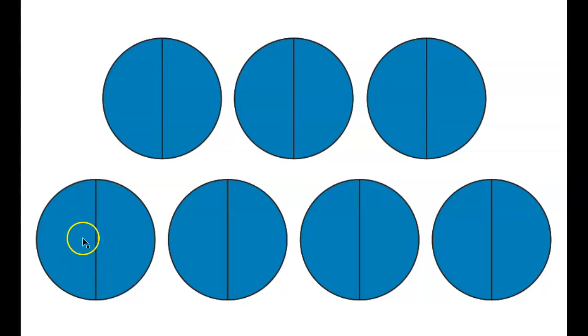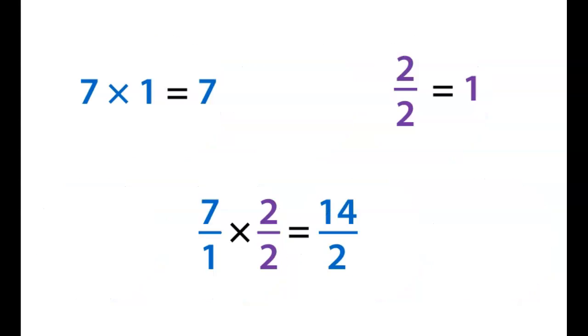and we're going to shade in 14 of those shaped pieces. So, 1, 2, 3, 4, 5, so all the way up to 14. We got 14 there, and this looks identical to 7 over 1. We already said this is what 7 over 1 looks like, and this is what 14 over 2 looks like, and they are the same.